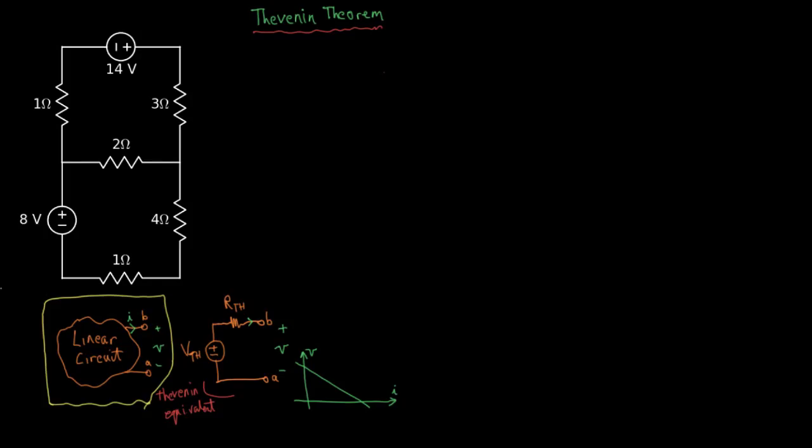as they affect some external part of the circuit that's not shown. That linear circuit can be shown to have the same impact on the external circuit as the Thevenin equivalent circuit, which is a voltage source in series with a resistor. The voltage source is called the Thevenin voltage and the resistor is called the Thevenin resistance.